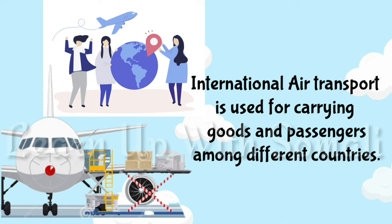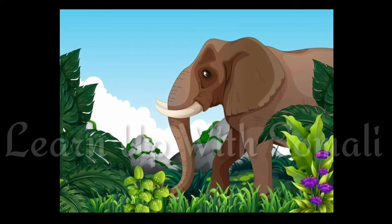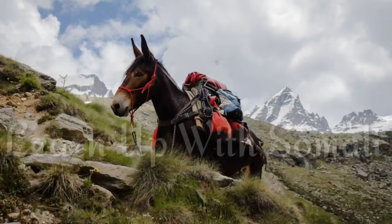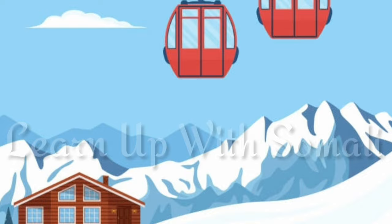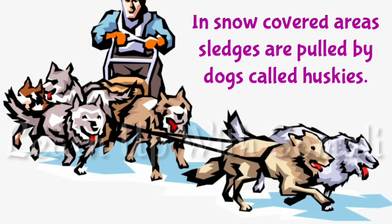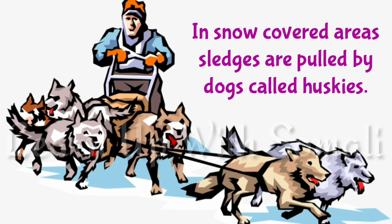Animals are also used as a means of transport. Elephants are used for traveling in forested areas, and mules and ponies are used in hilly regions. In the mountains, we use ropeways — that is, trolleys. In snow-covered areas, sledges are pulled by dogs called huskies, which are also an important means of transportation.